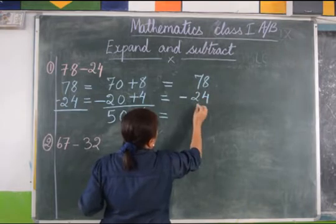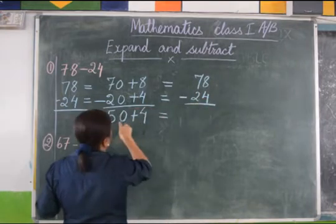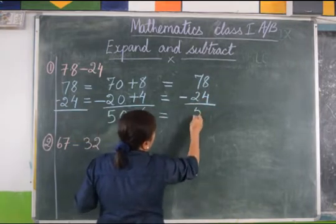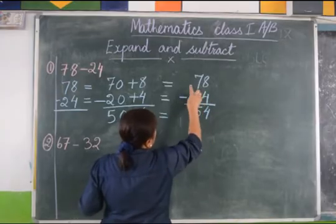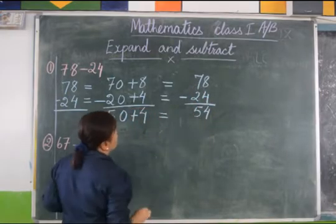The result is 50 plus 4, which is 54. Therefore, 78 minus 24 is 54.